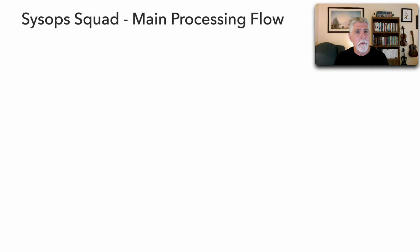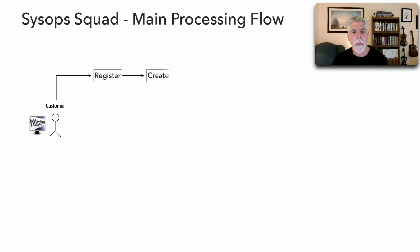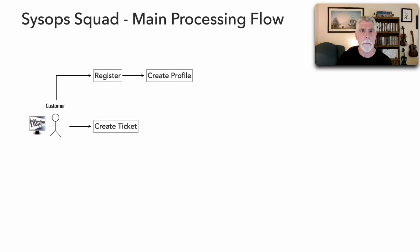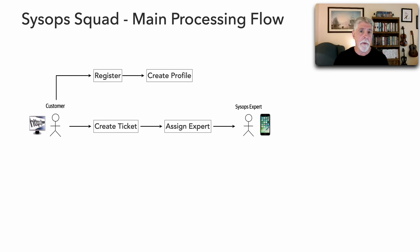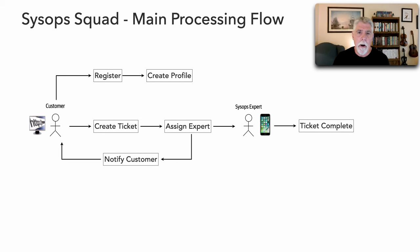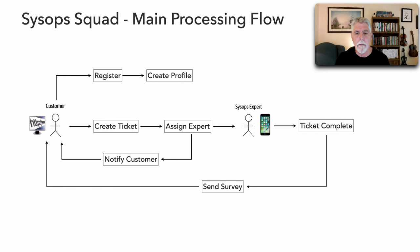Let's take a look at the main processing flow first. A customer registers with the site and creates a customer profile. If they experience a problem they can create a ticket through the website. The system then locates and assigns an expert, uploads that ticket information to the expert's mobile device, and at the same time notifies the customer that the experts are on their way. The expert goes to the home or office, fixes the problem, and marks the ticket complete.